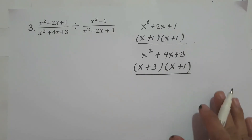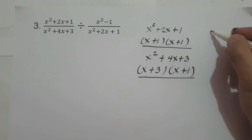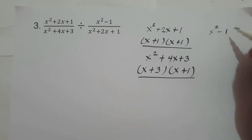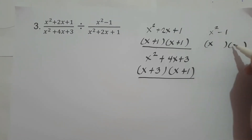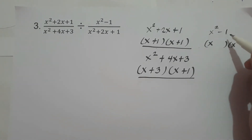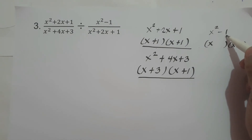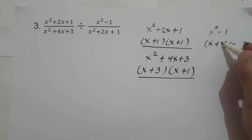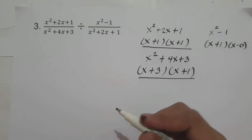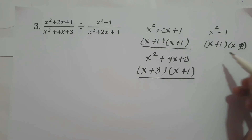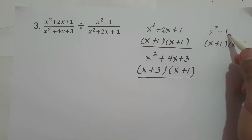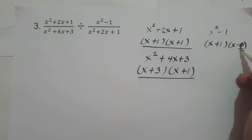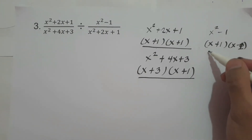What about x² minus 1? The factors of x² are x and x. Two numbers: if you multiply, you get negative 1; if you add, you get 0. That is positive 1 and negative 1. So 1 times negative 1 is negative 1, and 1 plus negative 1 is 0. So the factors of x² minus 1 are (x+1)(x−1).